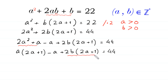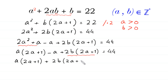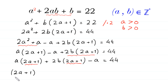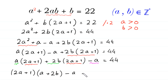Next, we rearrange the terms — we write 2b times 2a plus 1 first and move the negative a to the last: a times 2a plus 1, plus 2b times 2a plus 1, minus a is equal to 44. We can now factor out 2a plus 1 from the first two terms: 2a plus 1 times a plus 2b, minus a is equal to 44.